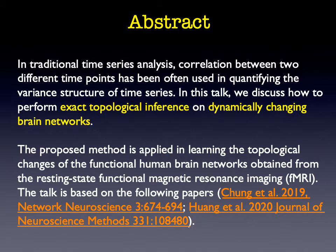This talk is based on two papers. One is published last year in Network Neuroscience, which deals with Betti numbers. Another paper is in the Journal of Neuroscience Methods, and it addresses modeling the dynamically changing brain networks.